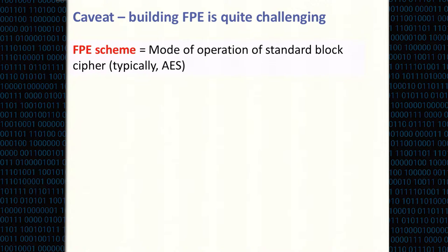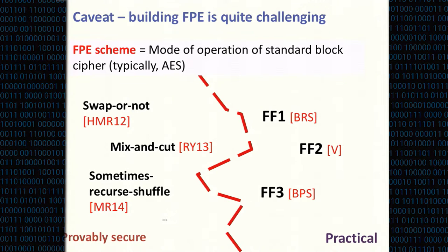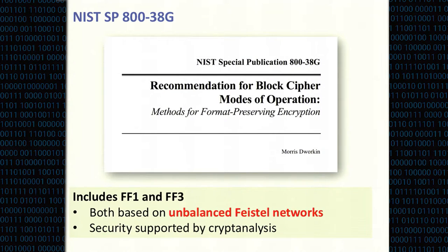An FPE scheme construction is usually meant to be a mode of operation of a standard block cipher like AES that becomes capable of encrypting over arbitrary domains while preserving the format. There have been three constructions — FF1, FF2, and FF3 — proposed by different authors and submitted to NIST for consideration in a format preserving encryption standard. Two of them, FF1 and FF3, have effectively made it into the standard, which was just recently published by NIST earlier this year.